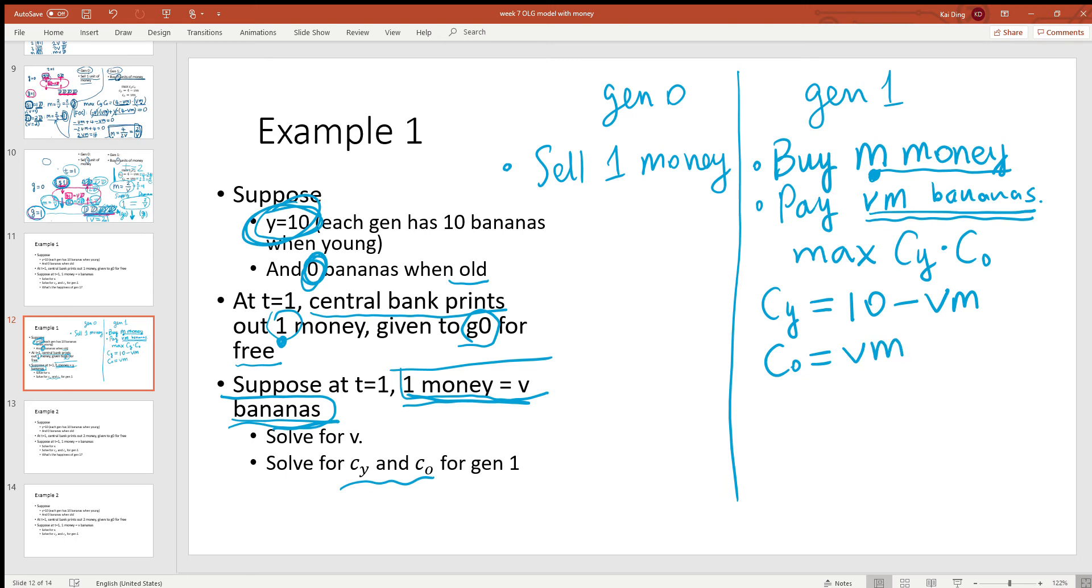So this is the problem of generation one. You can plug this into the budget constraint, take first order condition and solve for m. Eventually you're going to get an answer where m is equal to 5 over v.